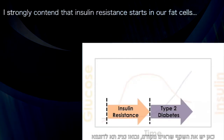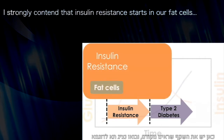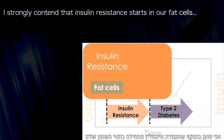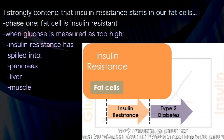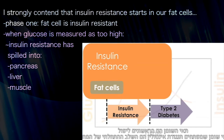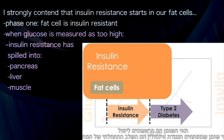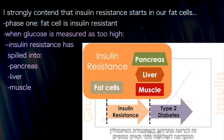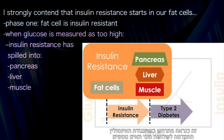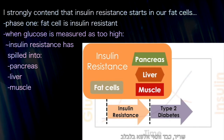Here we have that same paradigm that I presented just a moment ago. Now let's superimpose on this paradigm specific cells. I strongly contend that insulin resistance starts in our fat cells. So the fat cell is the first tissue to fall, and the fat cell being insulin resistant is really what's going on in this first phase of this progression. Then when we start to see the changes in glucose, this is likely occurring once the insulin resistance has progressed or spilled into three other tissues: muscle, liver, and pancreatic alpha cells.